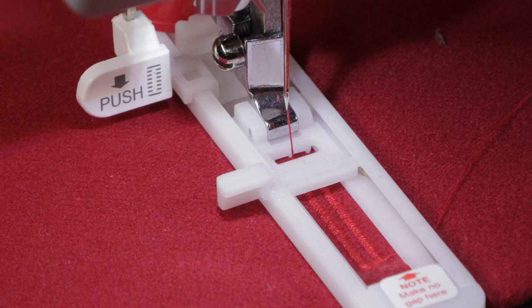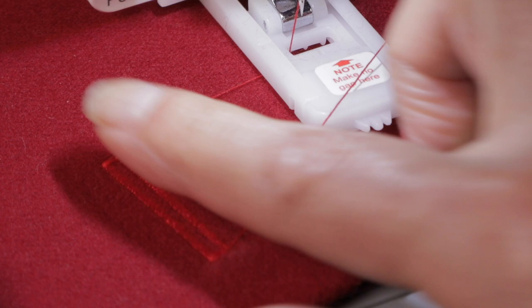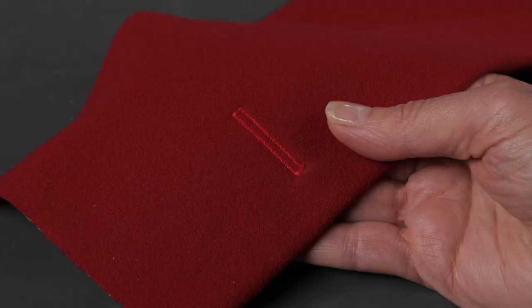The buttonhole sewed the entire cycle and stopped and did three tacking stitches at the end to secure. So when you're finished just raise the presser foot lifter and here is your beautiful one step buttonhole perfectly sized for your button that's in the foot.